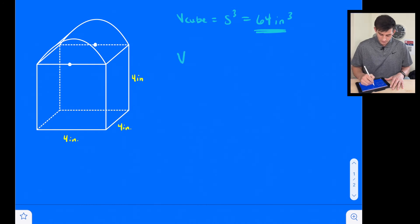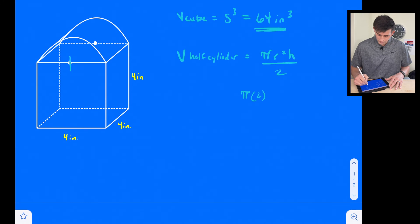Now if we think about our cylinder, so the volume of a half cylinder. We just said that is equal to π r² times height, that would be for the full cylinder. So since it's half, we can divide it by two. So we're going to find the radius, which would be half of four, so two squared, and our height is four. And then we're going to divide that by two. So we're going to get two squared is four, four times four is 16. So we get 16π over 2, which is equal to 8π.